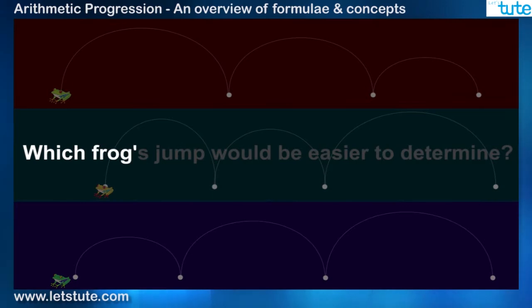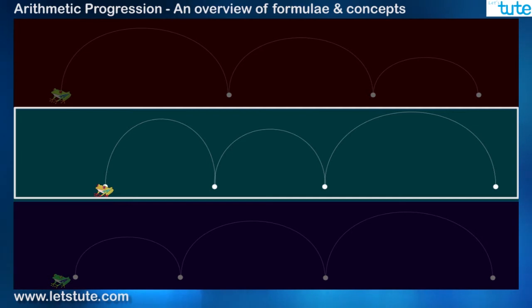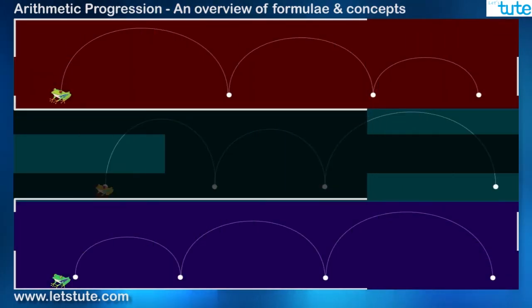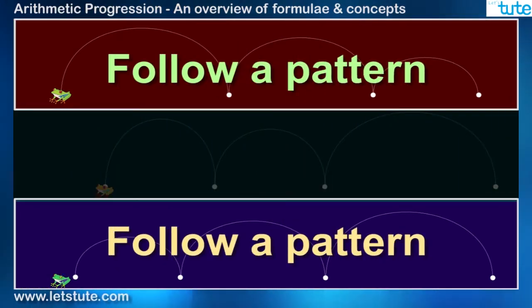Can you tell me which frog's jump would be easier to determine? For the second frog, probably it's not possible but for the rest two, we can predict the jump. And if I ask why, then an obvious answer will be because they follow pattern, right?